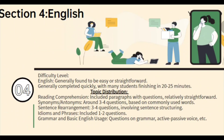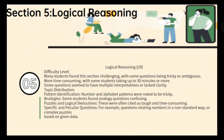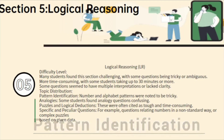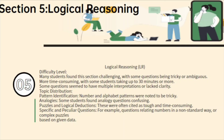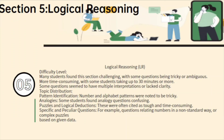This is the English part analysis. The time duration for this section will be around 20 to 25 minutes. For the Logical Reasoning part, identification questions were somewhat tricky. If you are not confident about a question, just skip that part — if you go with a guess estimate, you will end up getting a negative mark. So be careful with those questions.